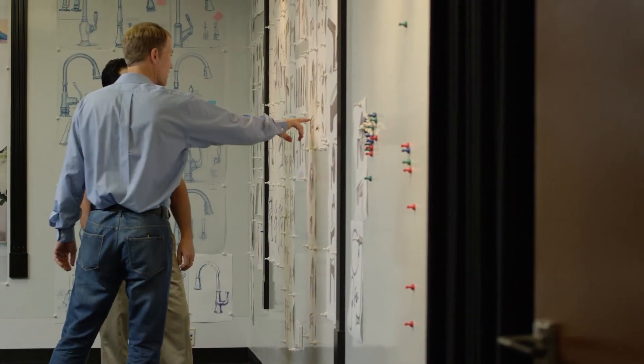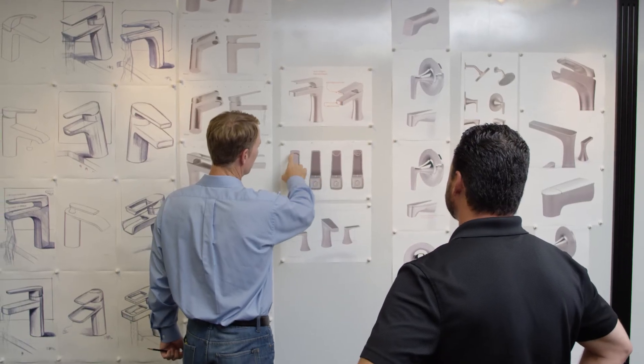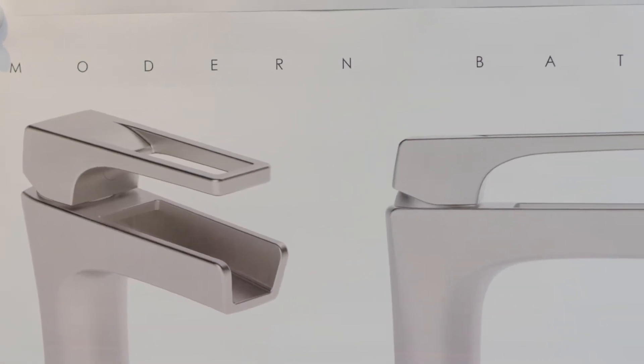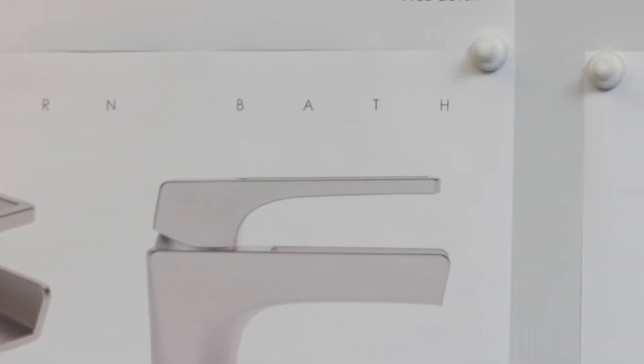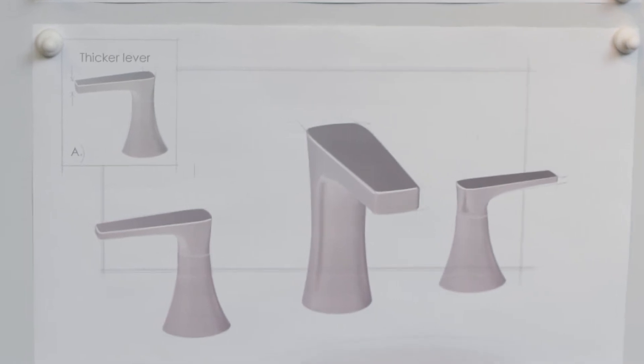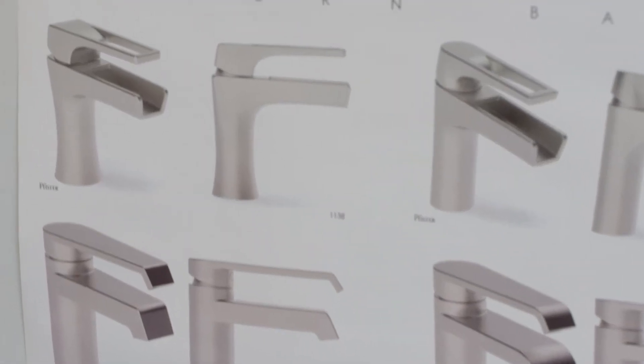Typically, once we get a range of designs that we want to narrow down, we'll work with our customer to do internal focus groups for them and also work within our own organization to get a round table of people talking about the designs. What are the great elements of it?